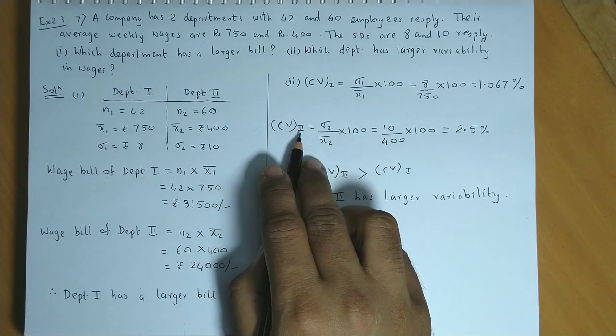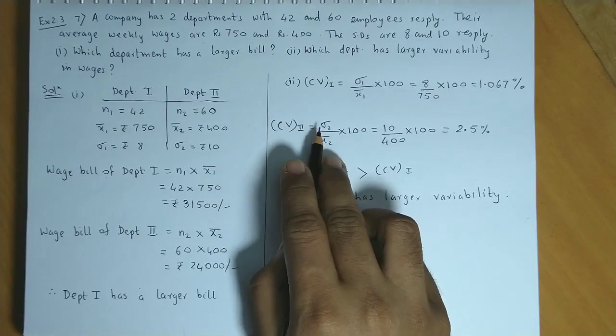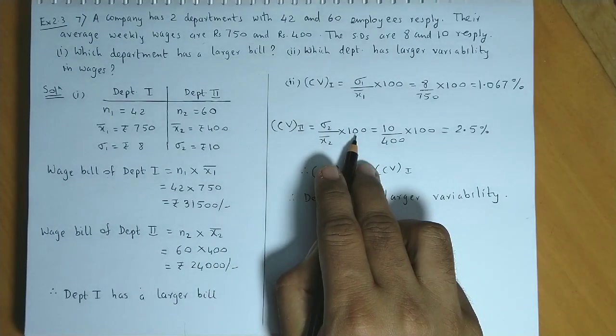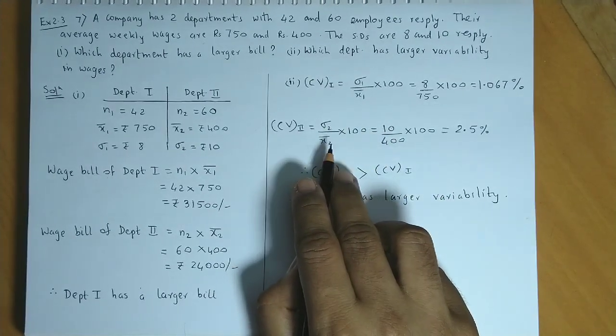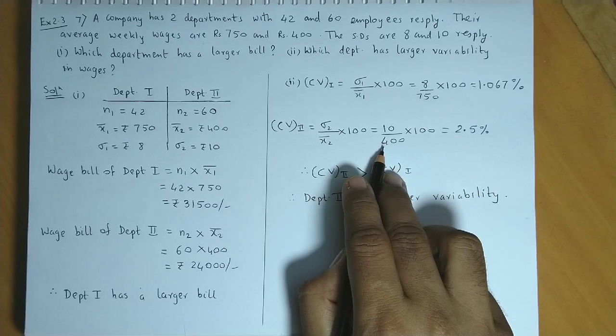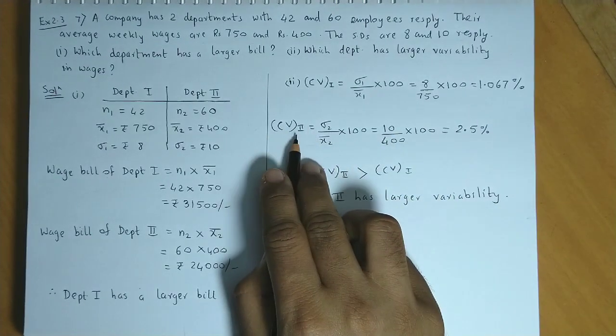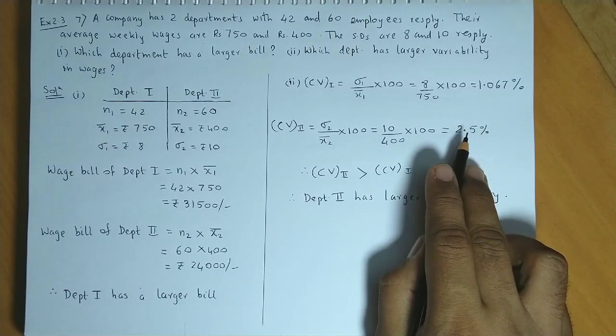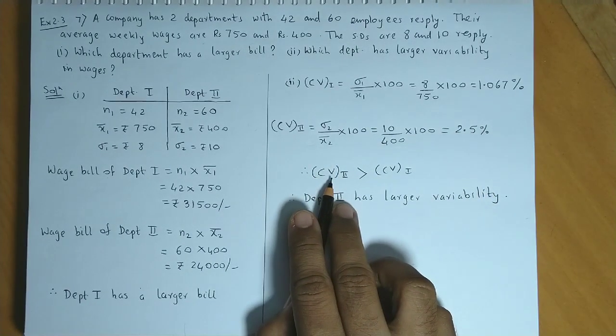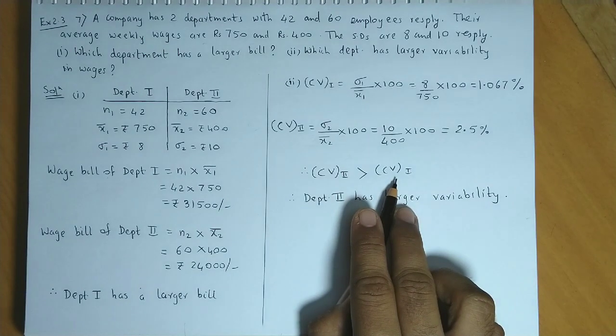We'll find CV for second department, again SD upon mean into 100. So SD is 10, second department average wages is 400, into 100. CV of second department is 2.5 percent. So CV of the second department is greater than CV of the first department.